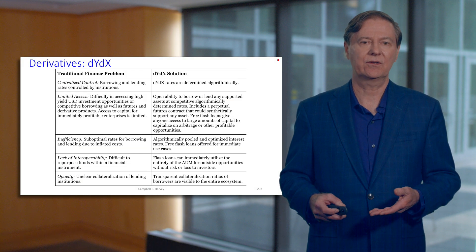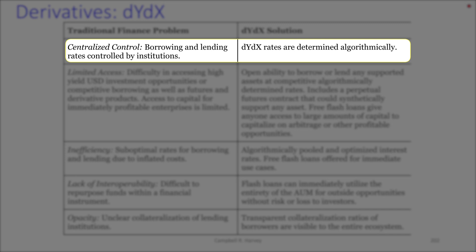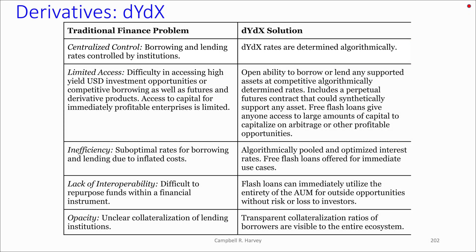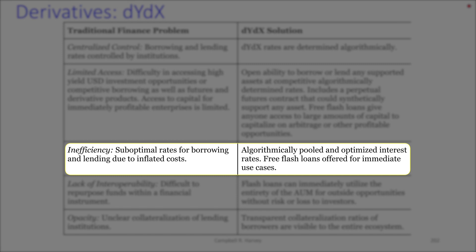dYdX offers very substantial solutions as a decentralized protocol. They've got their decentralized governance token DYDX. This is open to anybody — if you're trading derivatives in centralized finance, you need to be qualified and go through the process at your broker. This is open to anybody. We've got free flash loans available, so arbitrage is now democratized — not just for hedge funds or high net worth investors. This is all algorithmically done with optimized interest rates and free flash loans — much more efficient than centralized finance, with interoperability.